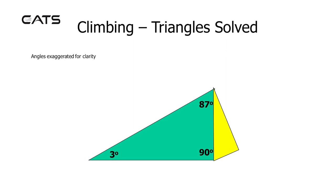In the green triangle, the interior angles of a triangle add up to 180 degrees. So if there's a 3 degree glide path and it's a right angle triangle of 90 degrees, the remaining angle must be 87 degrees.